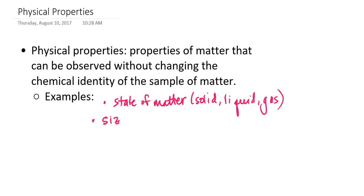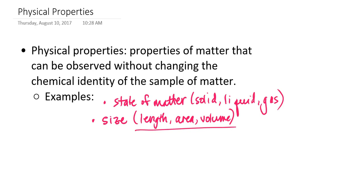Similarly, the size of a sample of matter is also considered a physical property. For example, if I have something that I can measure the length for, or measure and calculate its area or its volume — all of these characteristics I can measure and observe without changing the identity of the sample of matter. So if I'm studying an ice cube, I can measure the sides of the cube, calculate the volume, and do all of that without changing the identity of the cube or changing that it's made out of ice. Similarly, the shape of a sample of matter is another physical property — noting that I have a cube as opposed to a sphere or a cylinder is something I've been able to observe without actually changing what that sample of matter is made of.